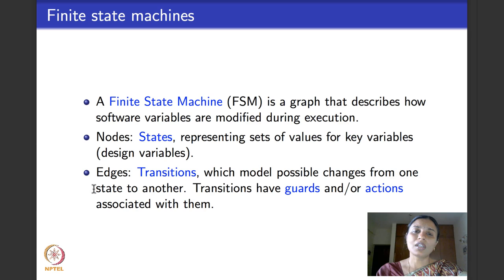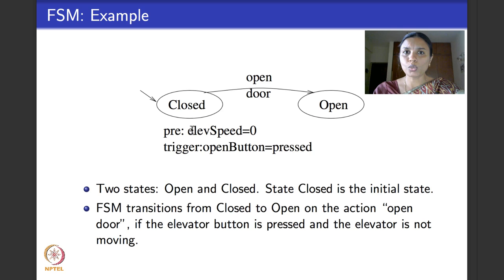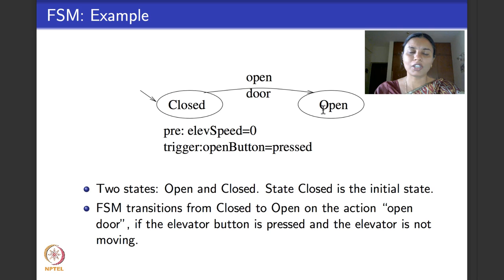Typically, many interesting finite state machine models useful for software design always have guards — conditions associated with edges — and triggers associated with nodes. Here is a simple example of a finite state machine. It has two nodes: one called closed and one called open. States are always given names with special identifiers which help you identify what these states are while modeling. There is an incoming arrow at the state closed, which says that closed is an initial state.